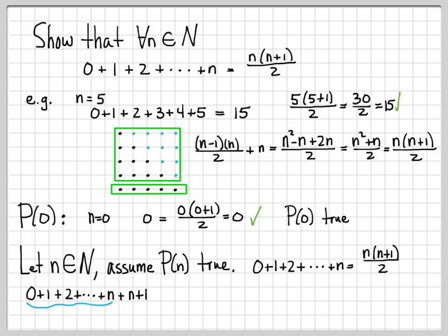What is this equal to? Well, I can use the fact that we're assuming. We're assuming that the summing up the first n numbers gives me n times n plus 1 over 2. So now I can just plug that in for this, the first n numbers. But I have to keep around the n plus 1. Now I'm going to get a common denominator. So n times n plus 1 plus 2 times quantity n plus 1 over 2.